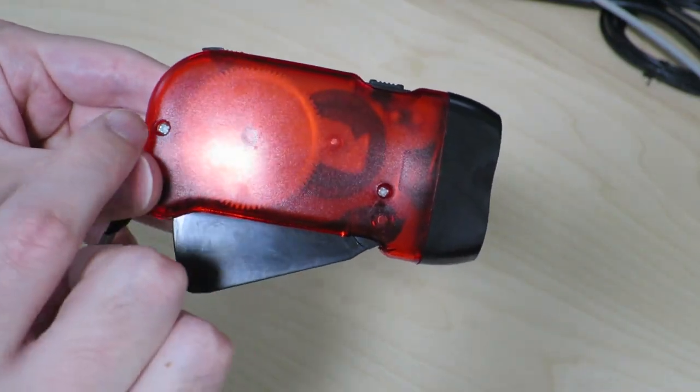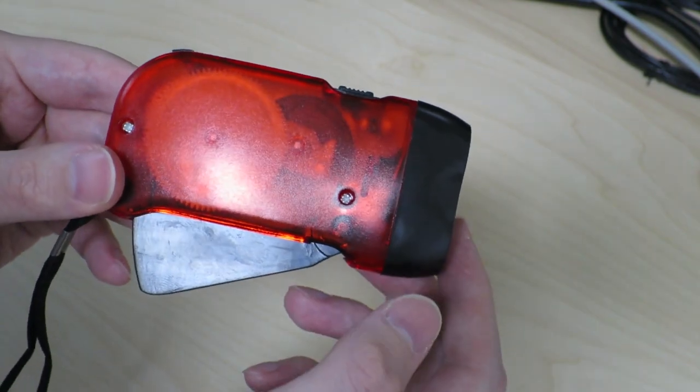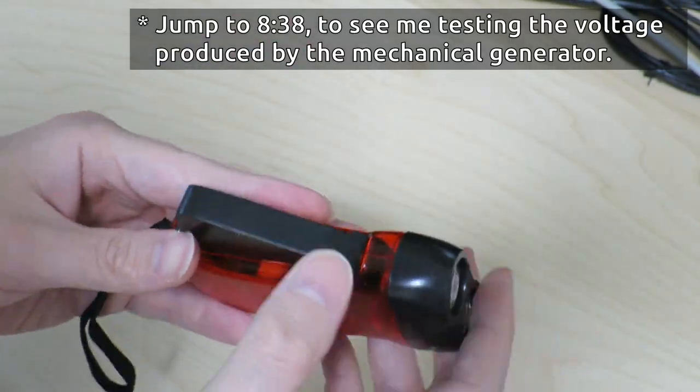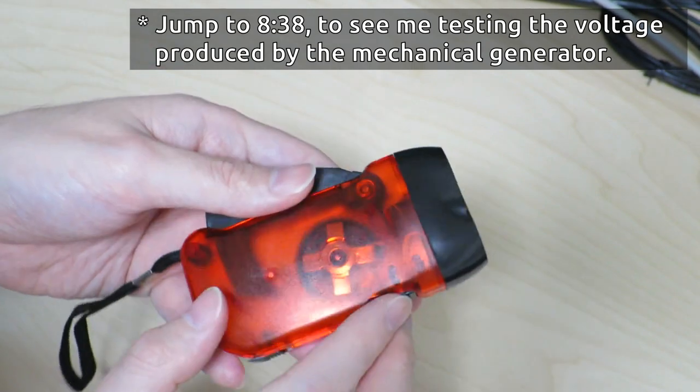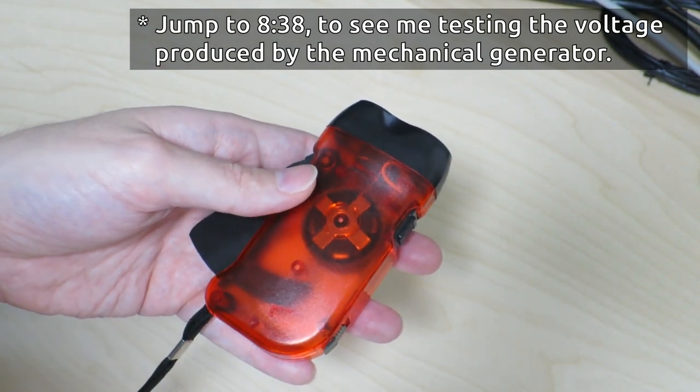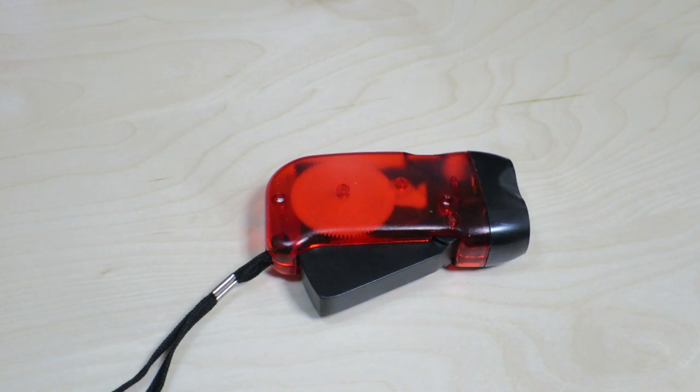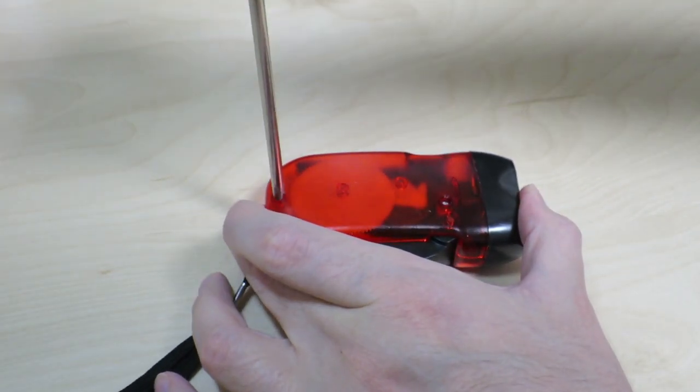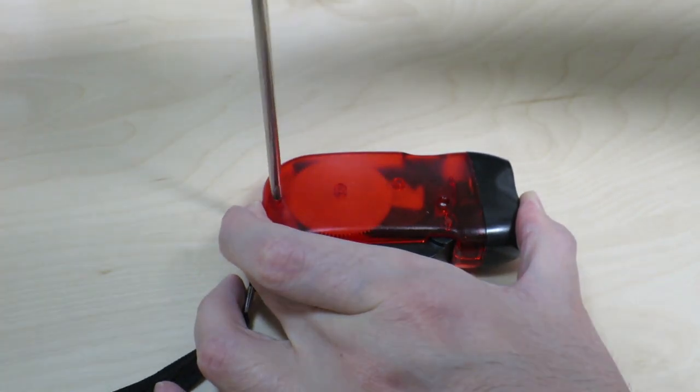This seems to be pretty simple. There's only two screws that I can see over here. And once we take those out, I think the front part will come off and we can just pop the cover off. So let's go ahead and try it. Just need to remove a couple of screws.